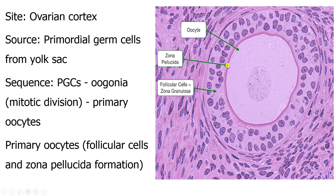The zona pellucida is very important. Its name comes from the Latin term that roughly translates as the transparent zone — pellucid means transparent, zona means zone. It's an extracellular membrane and it's very important in that it allows only one sperm to reach the oocyte. Once one sperm enters, it causes the zonal reaction that prevents any other sperm from going in, preventing polyspermy — multiple fertilization of one ovum with multiple sperm, which would disrupt the restoration of the diploid state.